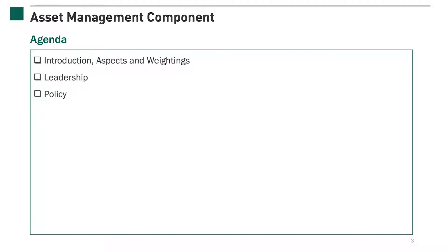Next, we'll go through indicators aspect by aspect, providing guidance and examples of how to report on each indicator in the assessment portal. We will also explain how materiality-based scoring applies to the management component. By the end of this lesson, you should be able to complete the first part of the management component of the infrastructure asset assessment.